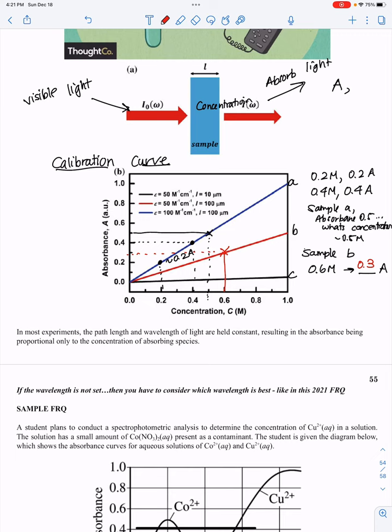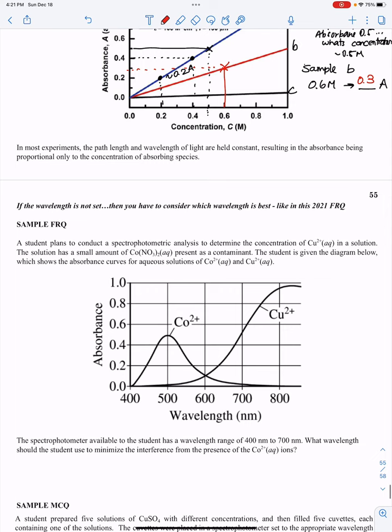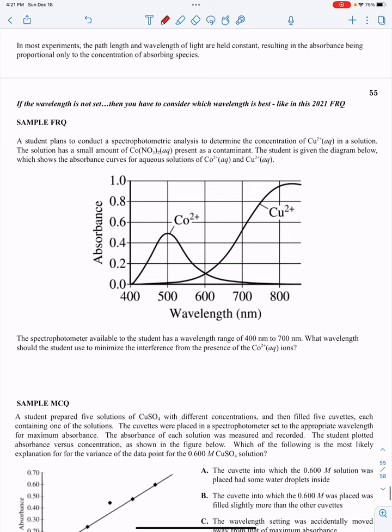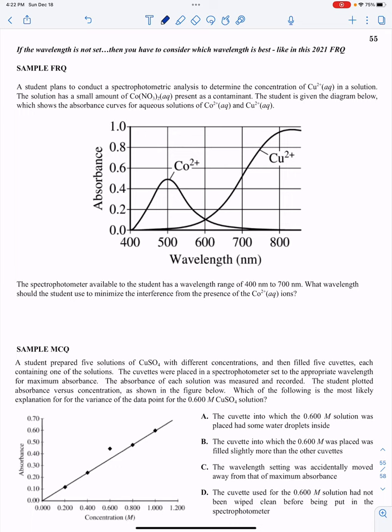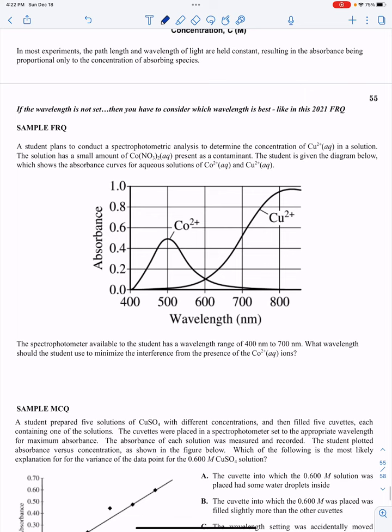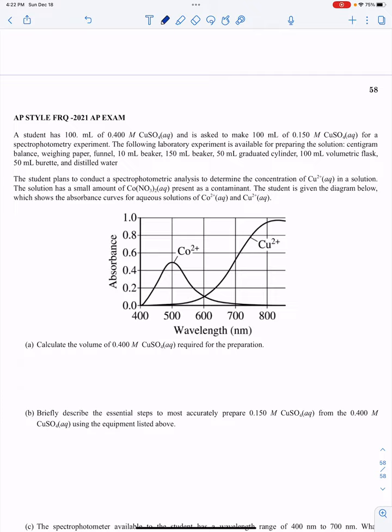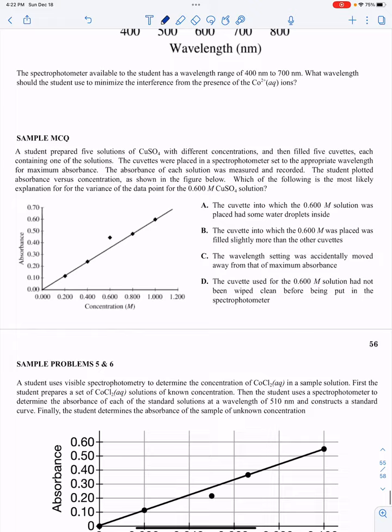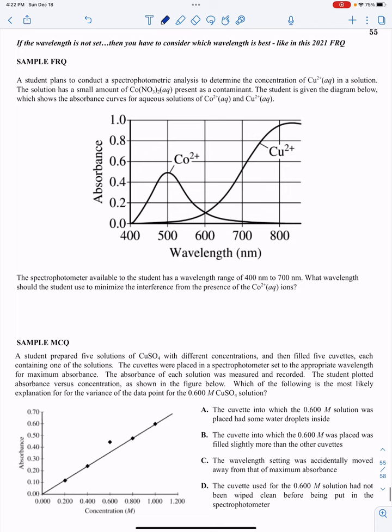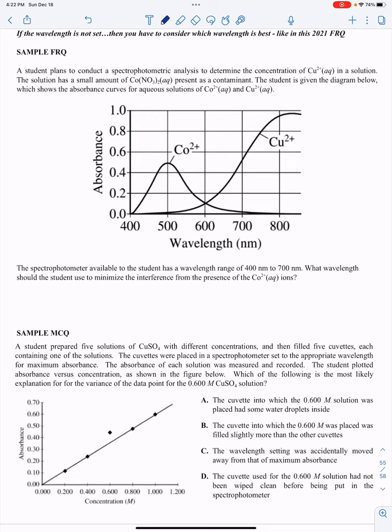I'm going to do some quick questions here. If the wavelength is not set, you have to consider which wavelength is best, like in this 2021 FRQ. I'll do this one and one more sample multiple choice question. If you want, you could end the lecture here and try these sample problems on your own. You're responsible for doing sample problems 5 through 7, and for help, the AP style free response question from the 2021 exam.